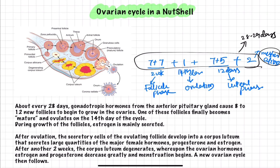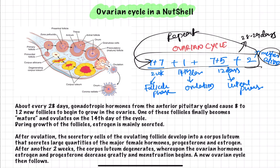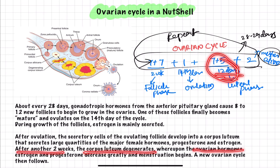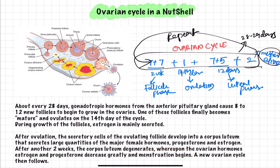Soon after menstruation, this cycle repeats again — this is the ovarian cycle. After ovulation, the secretory cells of the ovarian follicle develop into the corpus luteum during the luteal phase, which secretes large quantities of hormones like estrogen. After another two weeks — nearly 12 days — the corpus luteum degenerates, ovarian hormone levels decrease greatly, and menstruation begins.